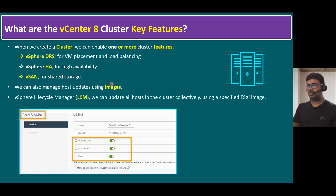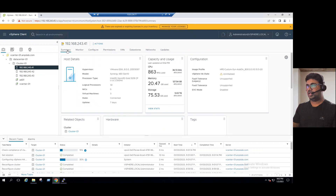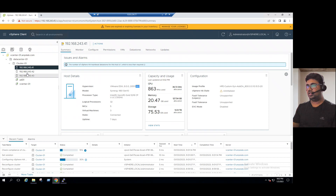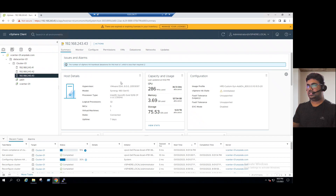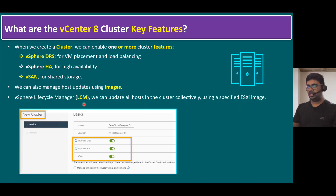We can also manage host updates using images. An image is essentially an ESXi ISO — if your hardware is HPE, it's better to download the HPE-customized image. All ESXi hosts must run the same build version. For example, checking a host's summary tab shows build version ending in 097 — all hosts must match. If there's a mismatch, vCenter has the vSphere Lifecycle Manager feature, which can update all hosts in the cluster collectively using the specified latest ESXi image build version.